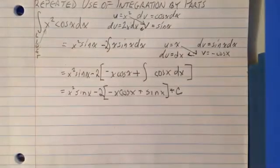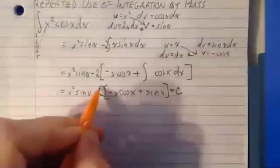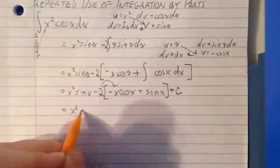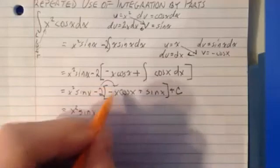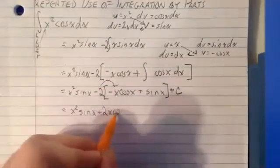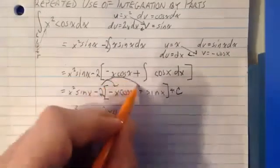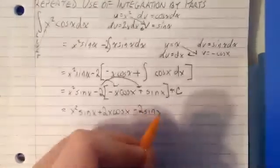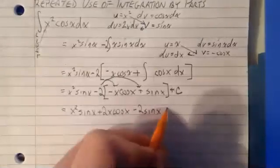Now distribute the two to write your final answer. So x squared sine x. So the negative two distributes and makes this plus 2x cosine x. Distribute it here makes it negative 2 sine x plus c.